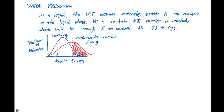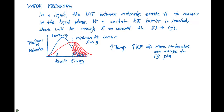It takes this whole extra section of the curve. So what we can say is that as we increase the temperature, we're going to increase the kinetic energy and more molecules can escape to the gaseous phase. This will go on continuously as molecules are converted from a liquid to a gas. And when we produce these gas molecules, we're going to see some type of vapor pressure.